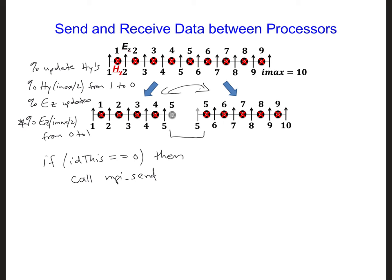If idThis is equal to 0, then we're going to have that processor call MPI_send, and we're going to send the last EZ component. So we'll have EZ at index iend_EZ_update, the last EZ field that we update. We're going to be sending just one number, so we have 1 here.